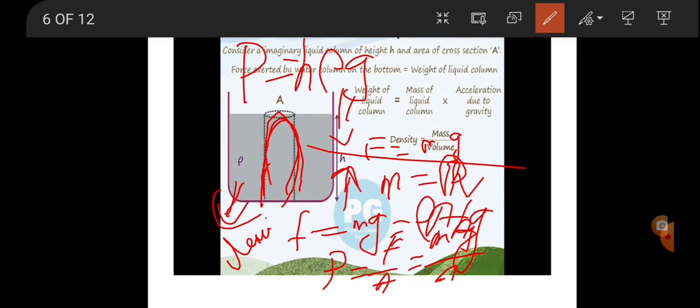We know that the thrust at the bottom of the column F equals weight of the liquid. Force equals mg. Rho value: mass m equals rho times volume. Mass m equals rho times V, which is rho times A times h.